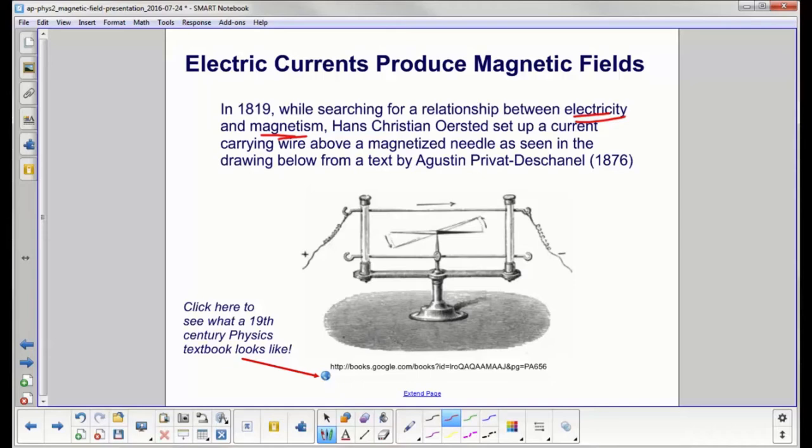Hans Christian Ørsted, who actually knew Hans Christian Andersen, set up a current-carrying wire - here's the wire up here - and he had a magnetized needle. Here's a drawing from 1876, and you can actually click here to see what a 19th century physics textbook looks like.